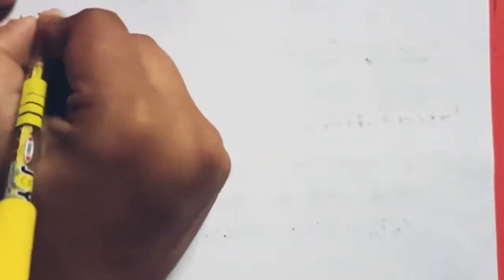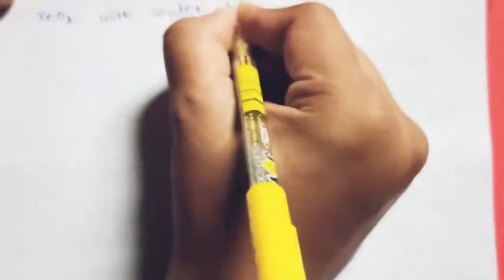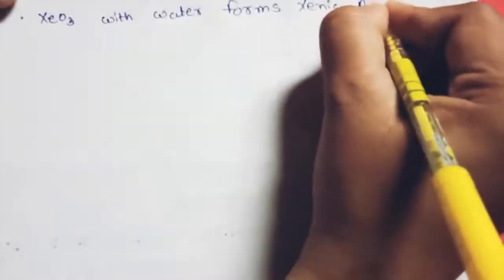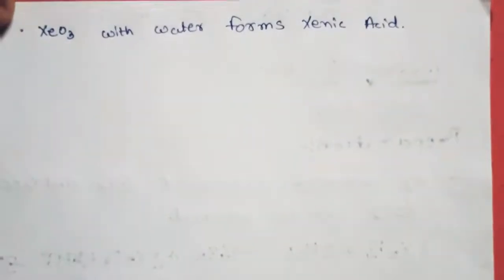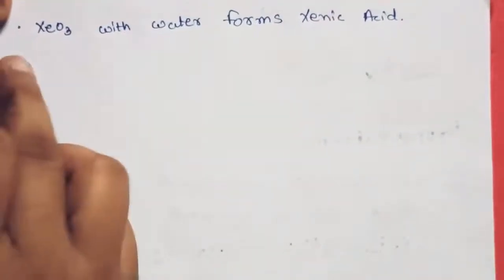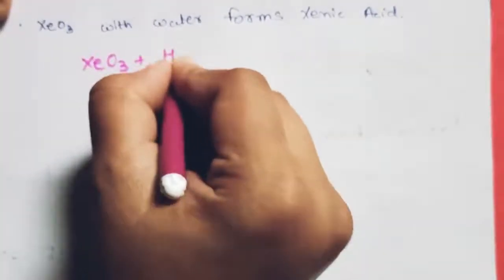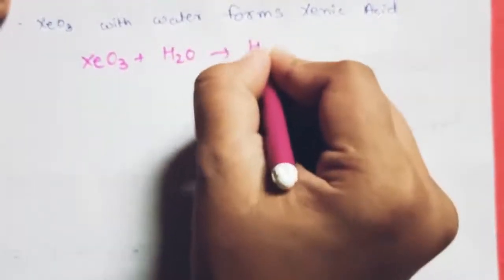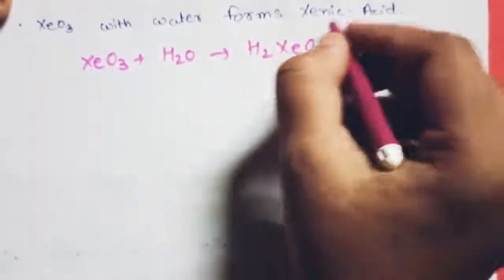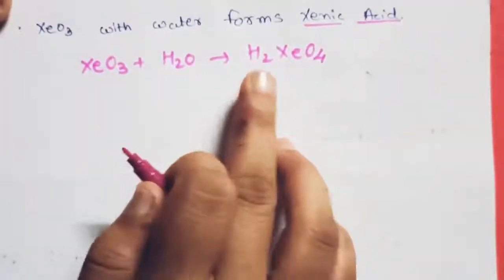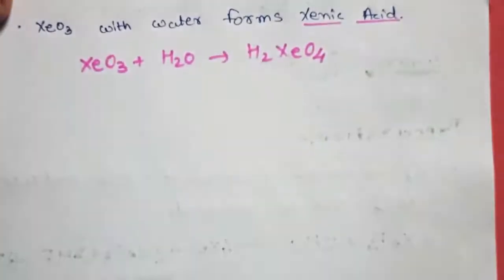Continuing properties of XeO₃: XeO₃ with water forms xenic acid. The reaction is: XeO₃ + H₂O → H₂XeO₄, which is known as xenic acid.